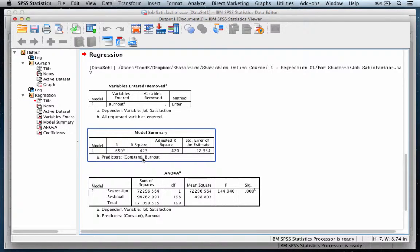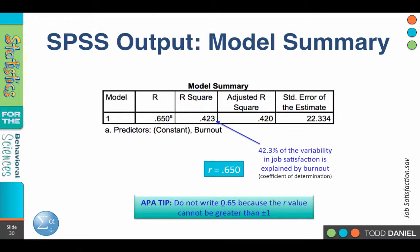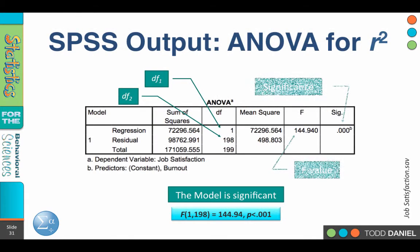In fact, let's go back to PowerPoint and we'll take a closer look at these output data. Our R-square of .423 tells us that 42.3 percent of the variability in job satisfaction is explained by variability in burnout. That's our correlation as .65 or .650, but we would not write it as 0.65 because the R-value is limited between positive and negative one. It cannot be greater than one. Therefore, we do not use a leading zero. Only if the value could be greater than one would you include a leading zero when you wrote up the number.